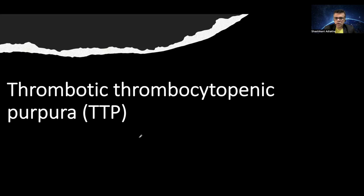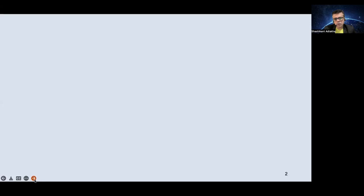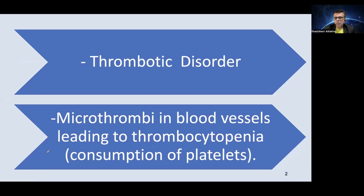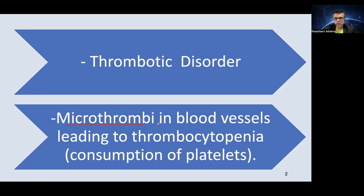Hello and welcome to the video. Today's topic is Thrombotic Thrombocytopenic Purpura, a high yield topic. Thrombotic Thrombocytopenic Purpura is a thrombotic disorder in which there is microthrombi formation. There are a large number of microthrombi that are generated in the small blood vessels as well as the large blood vessels.